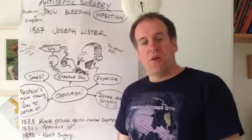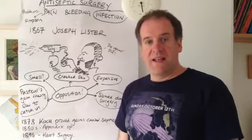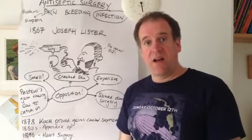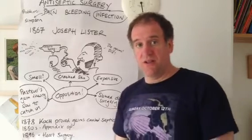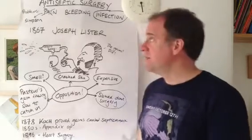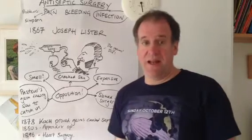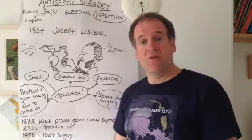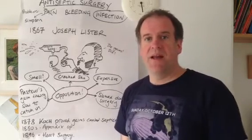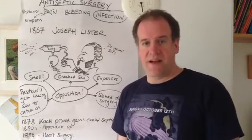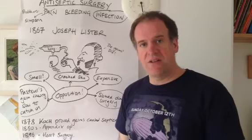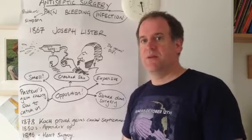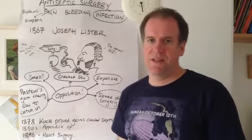James Simpson, with his use of chloroform as an anaesthetic, had become one of the major problems of surgery in the 19th century, and that was pain. But patients were still becoming infected. Their wounds were going gangrenous, or they were getting blood poisoning, septicemia, which was leading to their deaths.